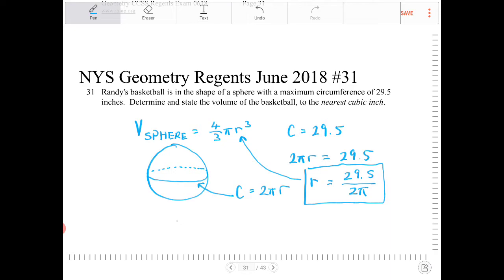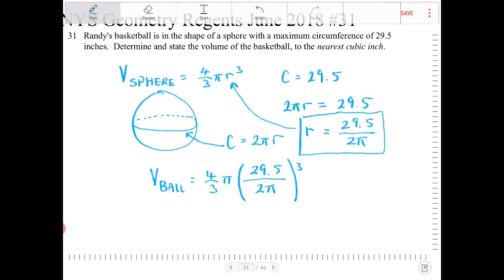So the volume of the basketball will equal four thirds times pi times 29.5 all over 2 pi—this is the radius now—to the third power, and we can enter this in the calculator.